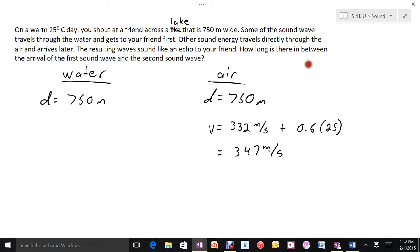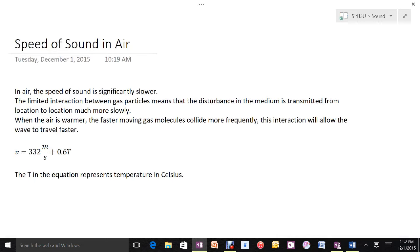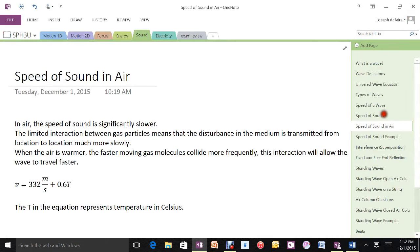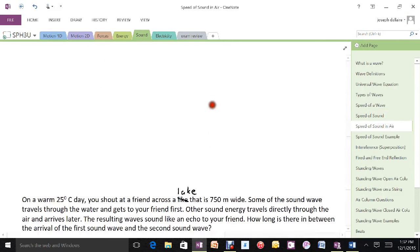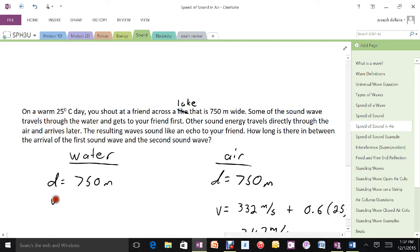For the water, we're going to use the speed of sound in water, which I had in a past slide here. I'm just going to take a quick look. 1,482. Okay. So the speed of sound in water is 1,482 meters per second.